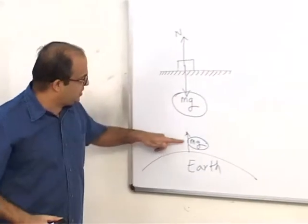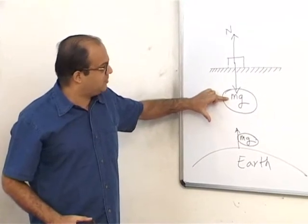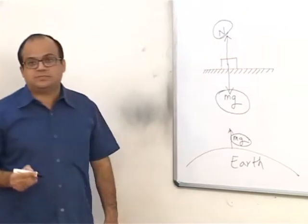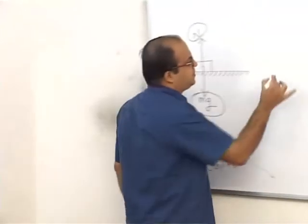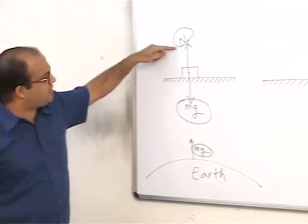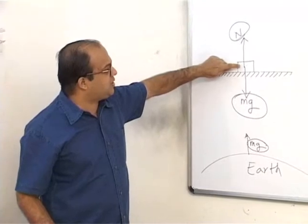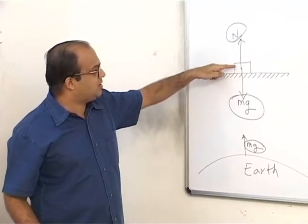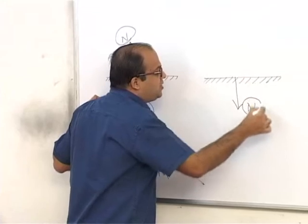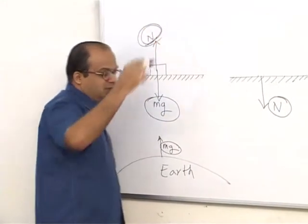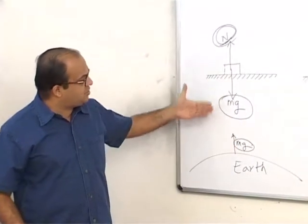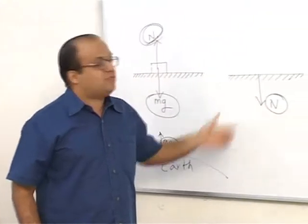So this force is an action-reaction pair to this force. Now which is the action-reaction pair for this normal reaction? Let us look at the surface on which the block is resting. Because the surface is exerting a normal force on the upward direction on this particular block, this block will exert an equal and opposite normal reaction on this surface. And this normal reaction and this normal reaction form an action-reaction pair. So two gravitational forces form an action-reaction pair. Two normal reactions form an action-reaction pair.